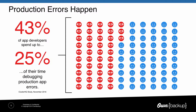But what's holding them back? According to a study by Cluster HQ, 43% of app developers spend between 10 to 25% of their time debugging errors they discovered in production. That means almost half of developers out there are wasting a significant amount of time fixing pushed code rather than developing new features.